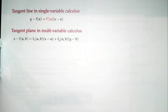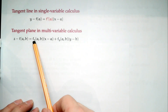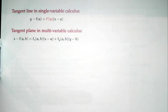We did this last time: the tangent plane looks like z minus f(a,b) equals f_x(a,b) times (x minus a) plus f_y(a,b) times (y minus b). Word of warning: I've taught Calc 3 for a while, and inevitably when people find tangent planes, they forget to evaluate the partial derivatives at the point (a,b). Don't forget — if you don't evaluate them, they're not tangent planes.